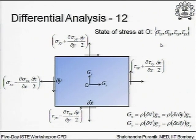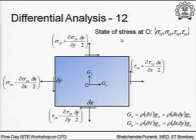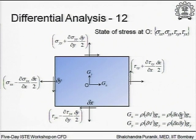Now that we know the state of stress at a point is given by four stress components, the center point O is considered the reference point where the state of stress is given by sigma_xx, sigma_yy, tau_xy, and tau_yx for a 2D analysis. The body forces in x and y directions are also shown, for the volume element delta x times delta y. I have shown two normal components and two shear components.